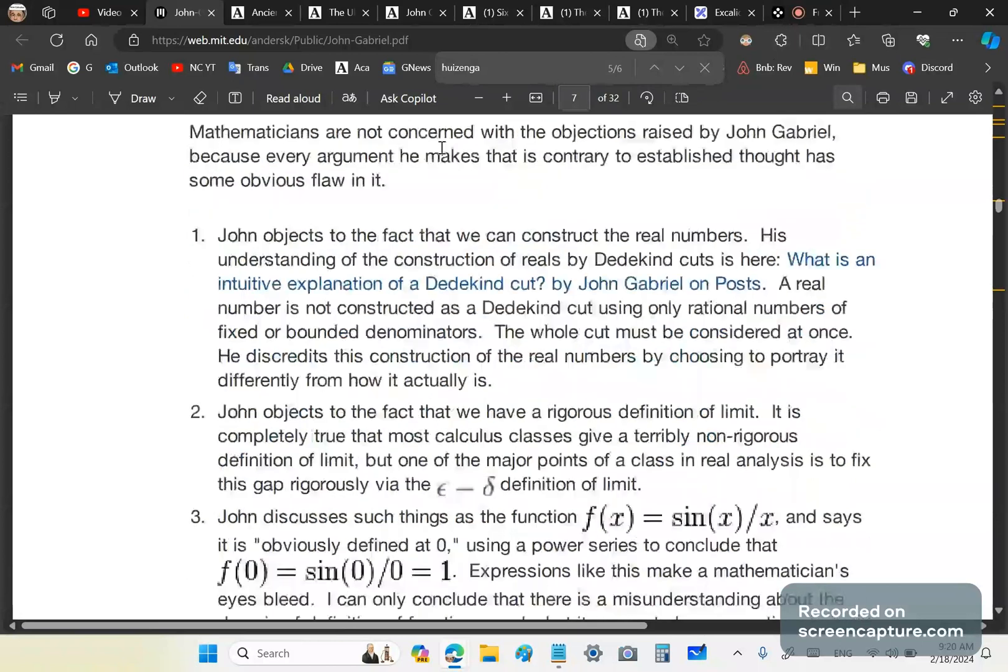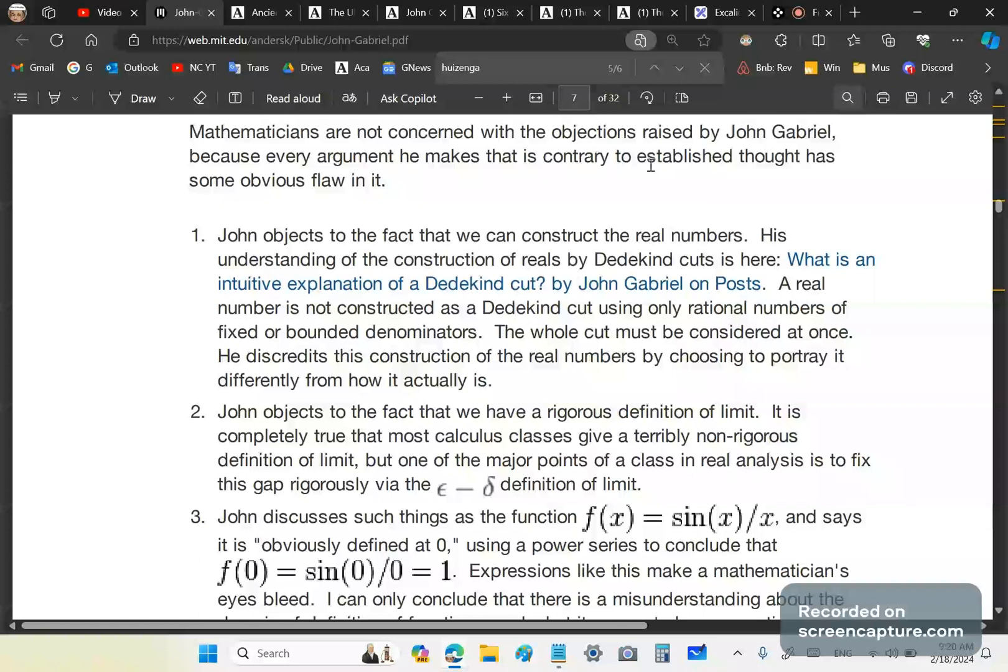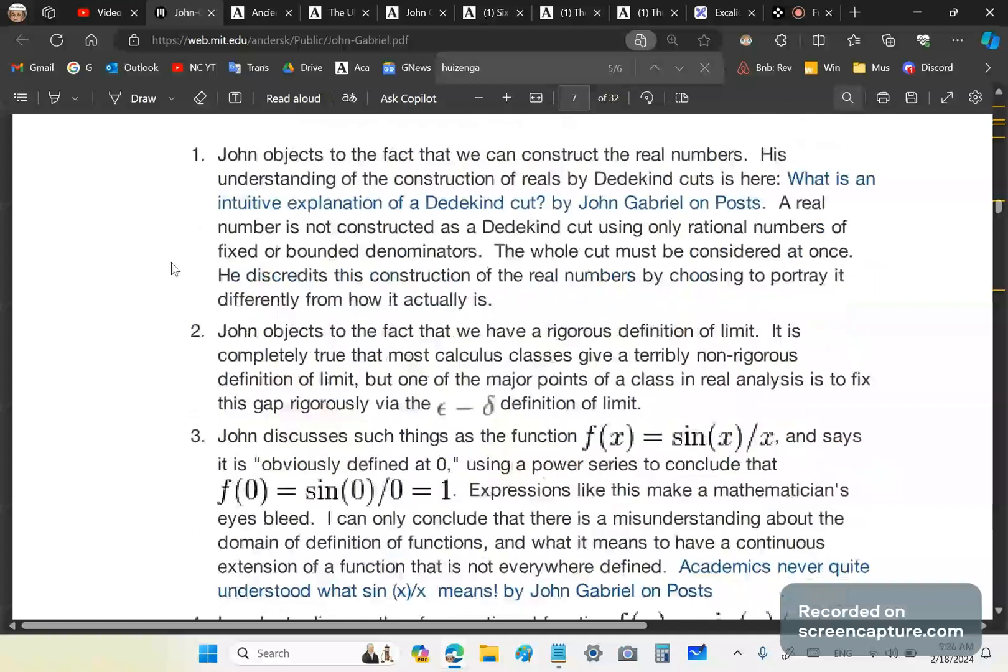So he says, mathematicians, who's he talking about? I don't know of any mainstream mathematicians. If you tell me mainstream morons, yes, I know a lot of them. And he says they are not concerned with the objections raised by John Gabriel. You know why? Because they're arrogant nincompoops. And then he makes a false statement immediately. He says, because every argument he makes that is contrary has some obvious flaw in it. Now, you see, this bastard saying something like this makes it very influential because he's a professor, and he's part of the mainstream. So somebody who reads this will think that this guy's right and I'm wrong. To say that everything I said has some obvious flaw in it without even saying what the flaws are, and then retracting his article for crying out loud. Why didn't he defend his bullshit claims in his article? I'll tell you why, because they were indefensible.